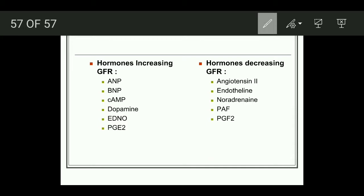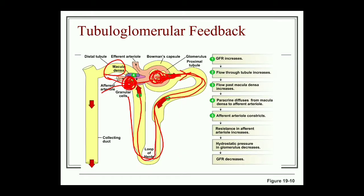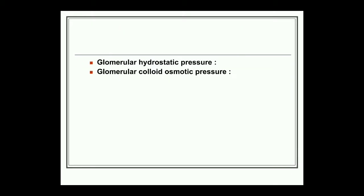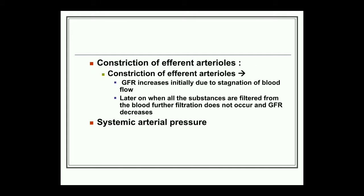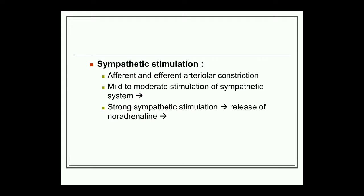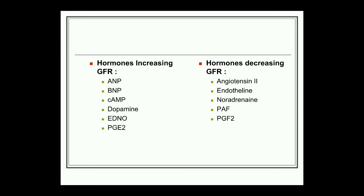To revise all factors affecting GFR: (1) tubuloglomerular feedback mechanism, (2) glomerular hydrostatic pressure, (3) glomerular colloid osmotic pressure, (4) Bowman's capsule hydrostatic pressure, (5) renal blood flow, (6) constriction of afferent arterioles, (7) constriction of efferent arterioles, (8) systemic arterial pressure, (9) sympathetic stimulation, (10) surface area of glomerular capillaries, (11) permeability of glomerular capillaries, and (12) hormones affecting GFR. That is all about GFR. Thank you.